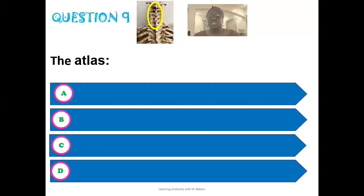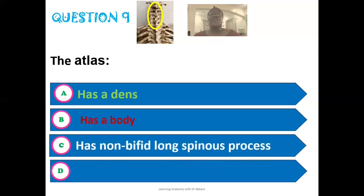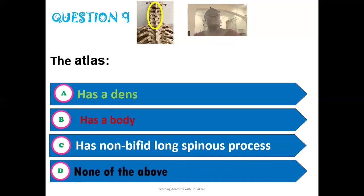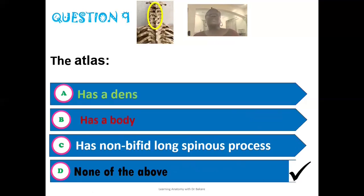The ninth question: which statement is true of the atlas? Options are: the atlas has a dens, the atlas has a body, the atlas has a non-bifid long spinous process, or none of the above. The correct answer is none of the above. The atlas does not have a dens, does not have a body, and has a bifid spinous process — not a non-bifid long spinous process.